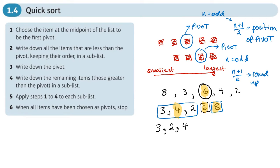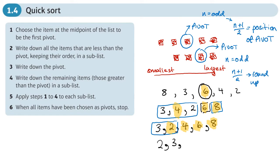We highlight values chosen as pivots at each stage — once chosen, a pivot stays where it is. Now we have a sub-list with 3 and 2. The pivot is to the right of center, so that's 2. The 3 pivots across to the right of 2 because it's bigger. Now we have 2, 3, 4, 6, 8.